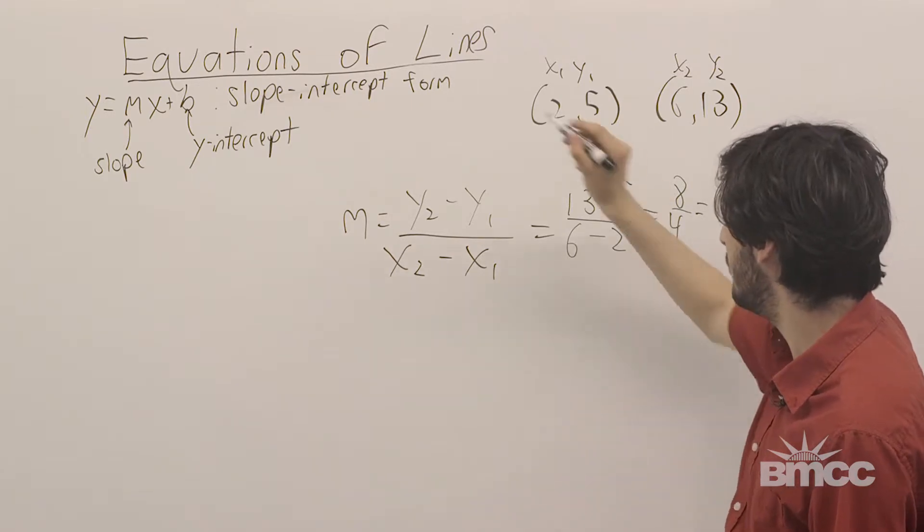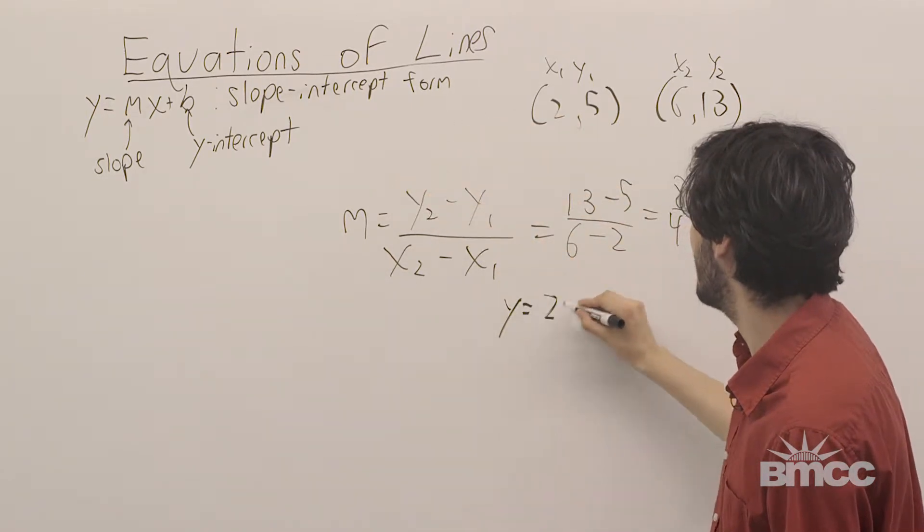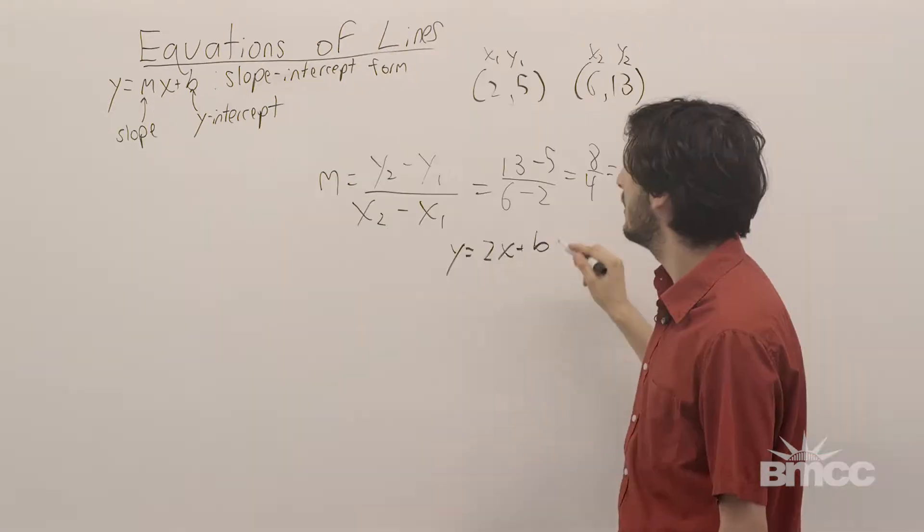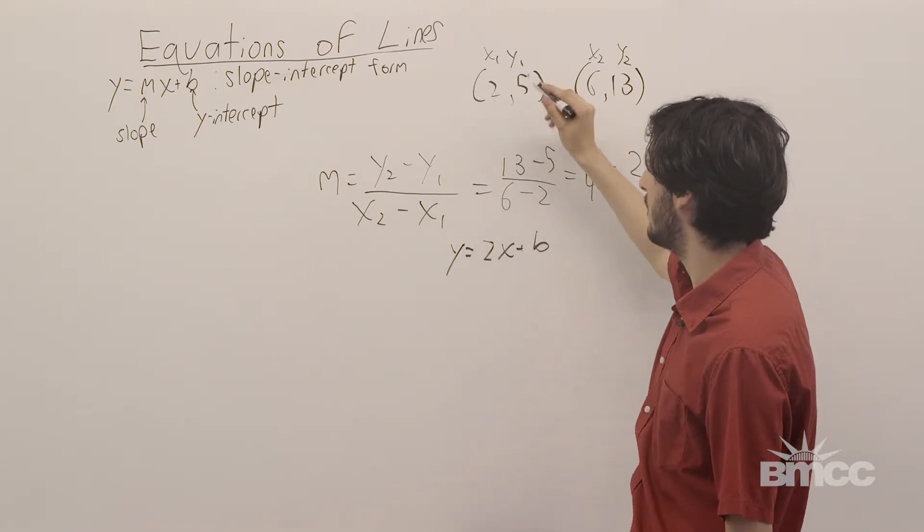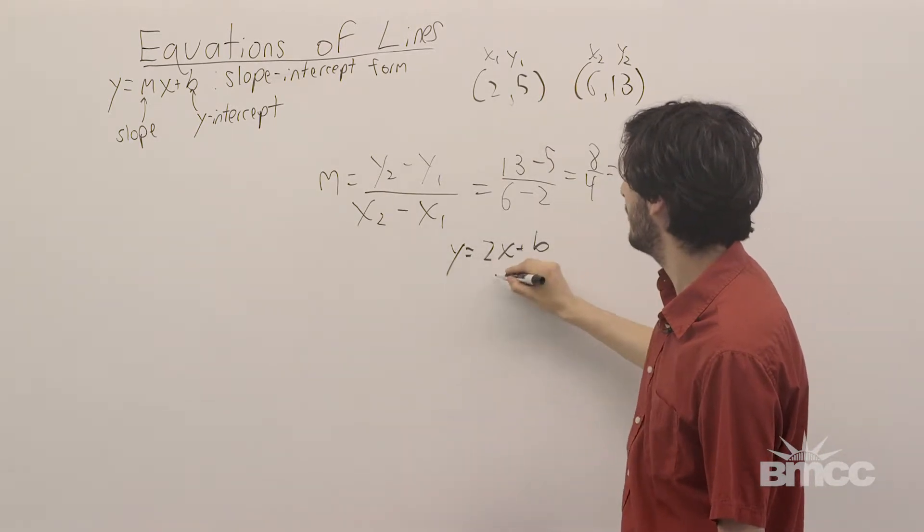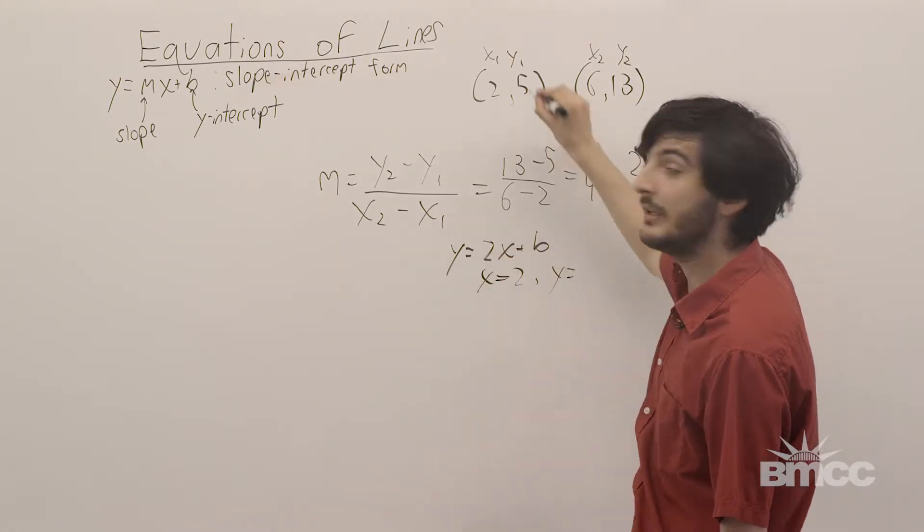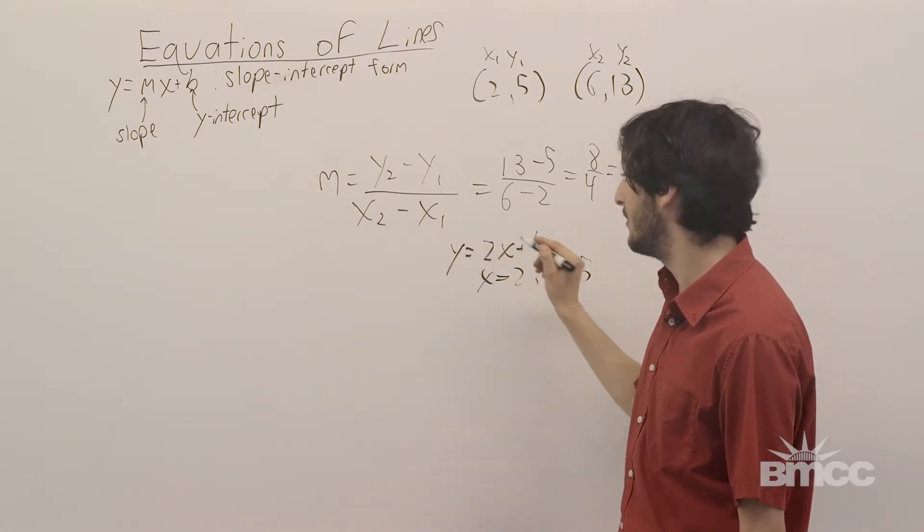So, our slope is 2, and we can write our equation y equals 2x plus b, which is still unknown. So, we can choose either of these pairs. Let's choose the first one, where we let x equal to 2 and y equal to 5. We can plug these two in and solve for b.